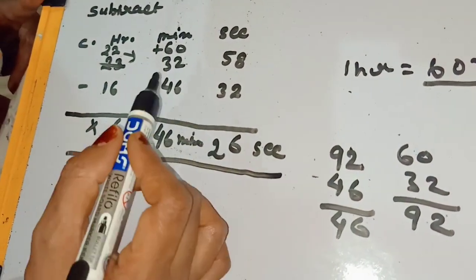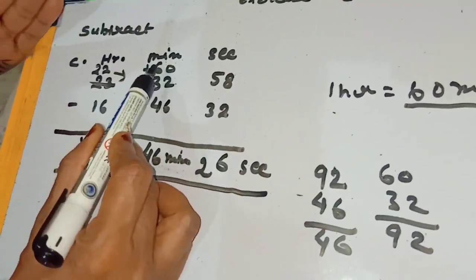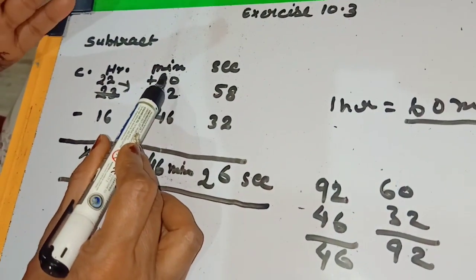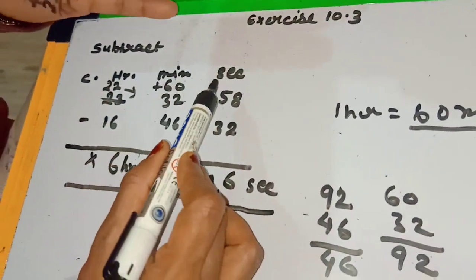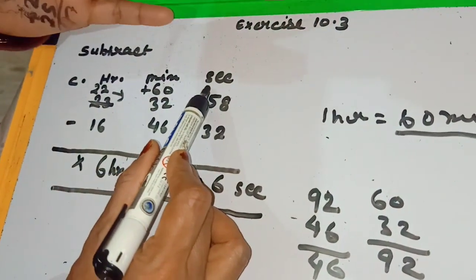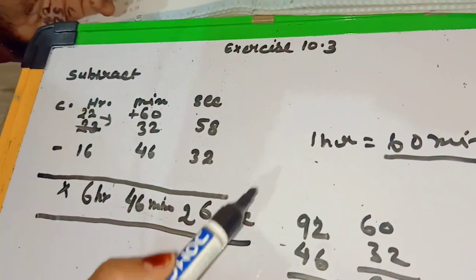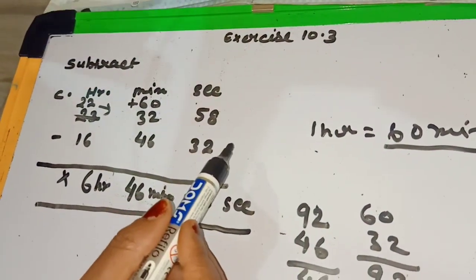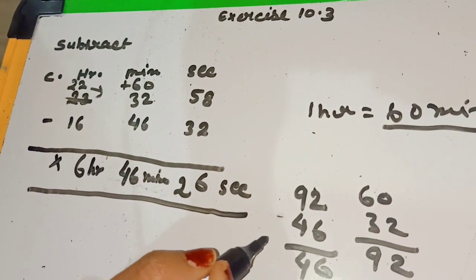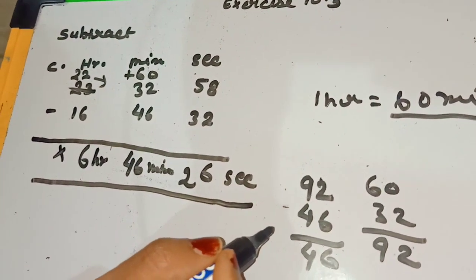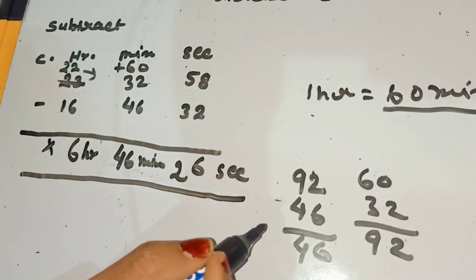Children, always remember: when we take 1 carry from hours for minutes, it automatically converts to 60 minutes. And when we take 1 carry for seconds from minutes, it automatically becomes 60 seconds. Always remember these things. Today's work for you: question numbers 1 and 2, you will do in your maths notebook. Thank you.